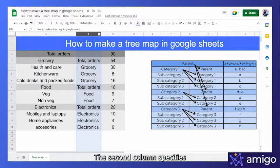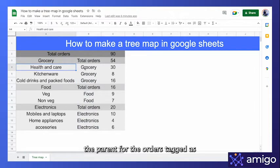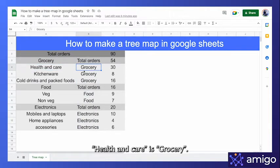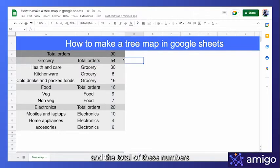The second column specifies the parent for each entity. For instance, the parent for the order tagged as health and care is grocery. The third column consists of numerical values, and the total of these numbers are at the top of the column.